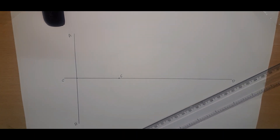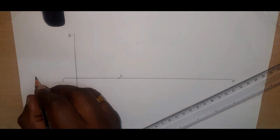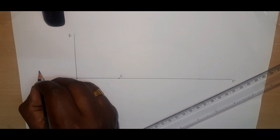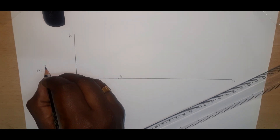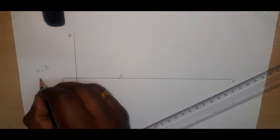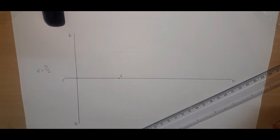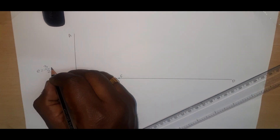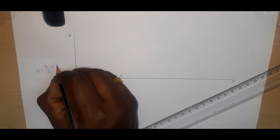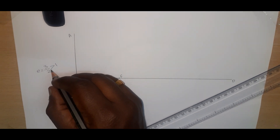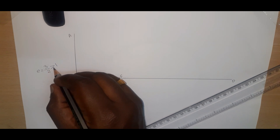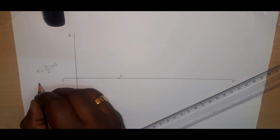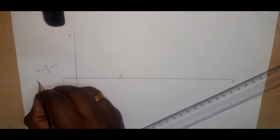Now we can go for the calculation. What is the eccentricity here? It is given in the question as 3/2. The value of 3/2 is 1.5, meaning one and a half, which is always greater than 1. So we can say surely it is a hyperbola.